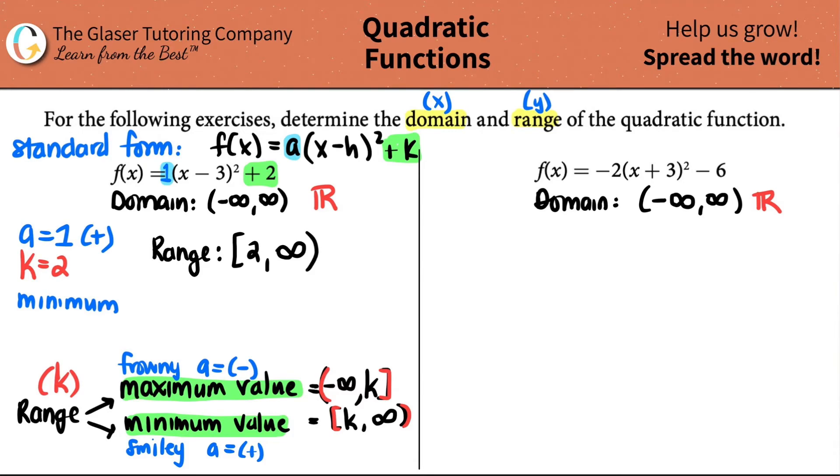So your domain is all real values. And your range would be starting at two and you're going all the way to infinity. Now let's just quickly do this one. We already figured out the domain is all real values because that's always for a quadratic. But now let's do the range. Well, do I have a max or a min? Do I have a frowny or a smiley? If we follow the standard form, and this is the standard form, standard form.